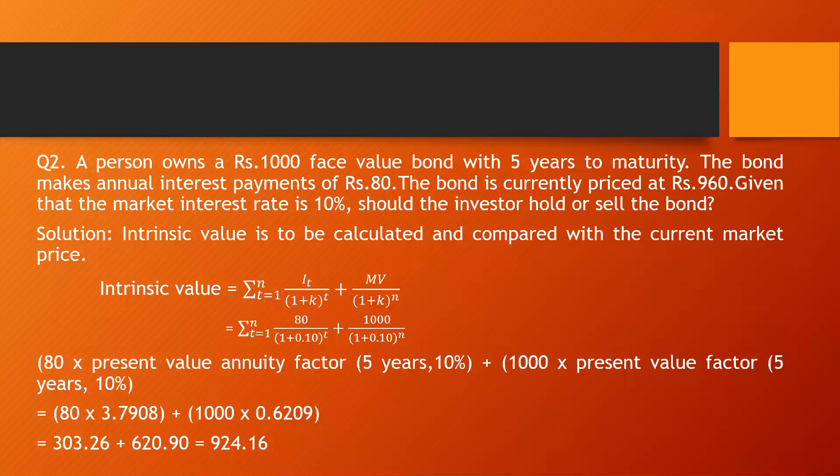The intrinsic value is rupees 924.16, but the bond is available in the market at rupees 960. That means the bond is overpriced — the actual value is 924, yet it is trading at 960 in the market. It is therefore best to sell the bond.